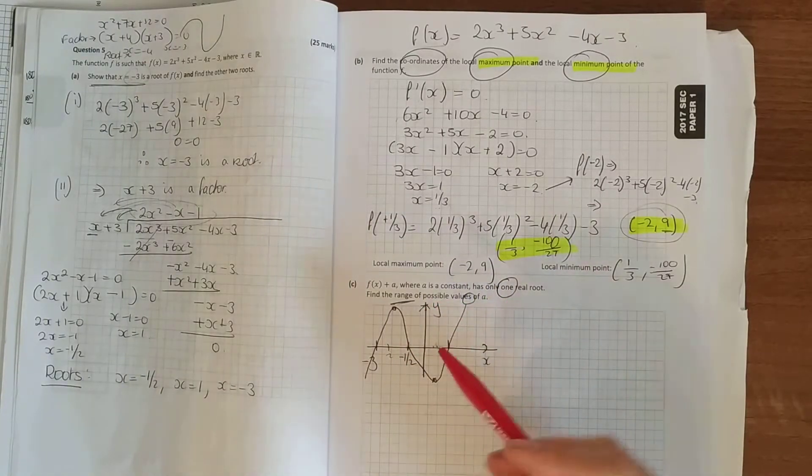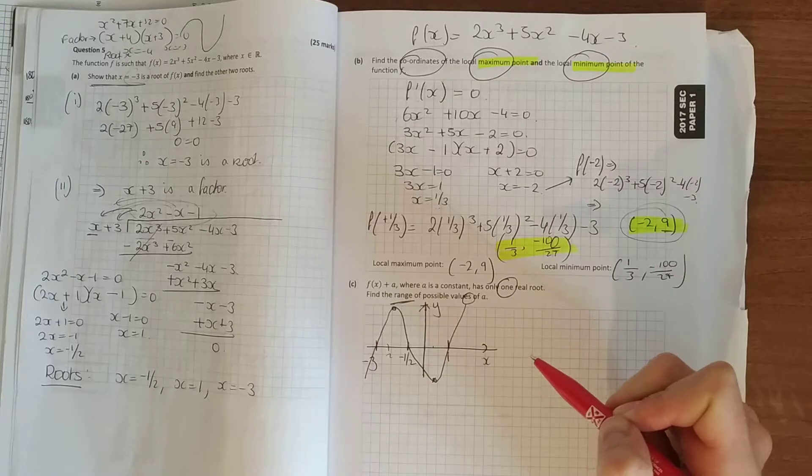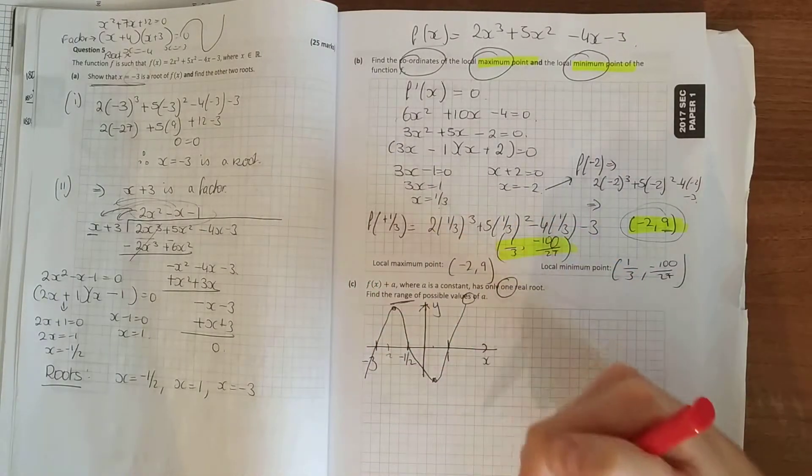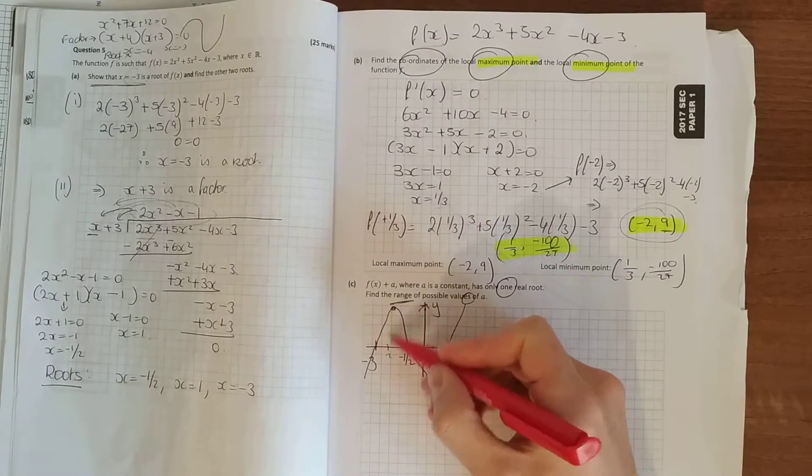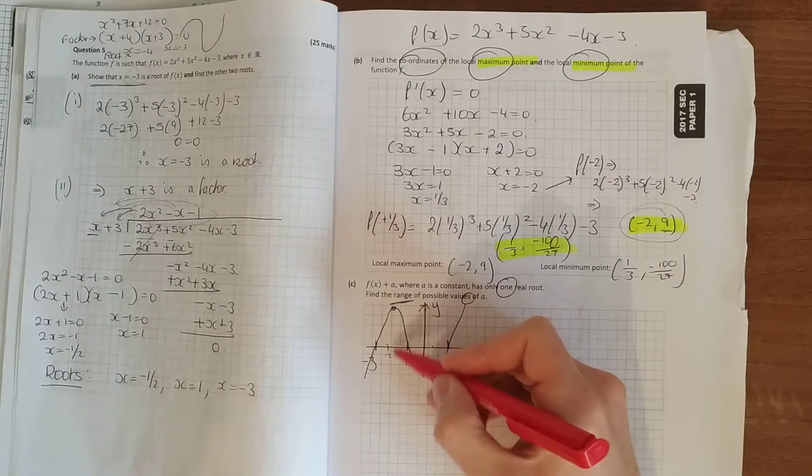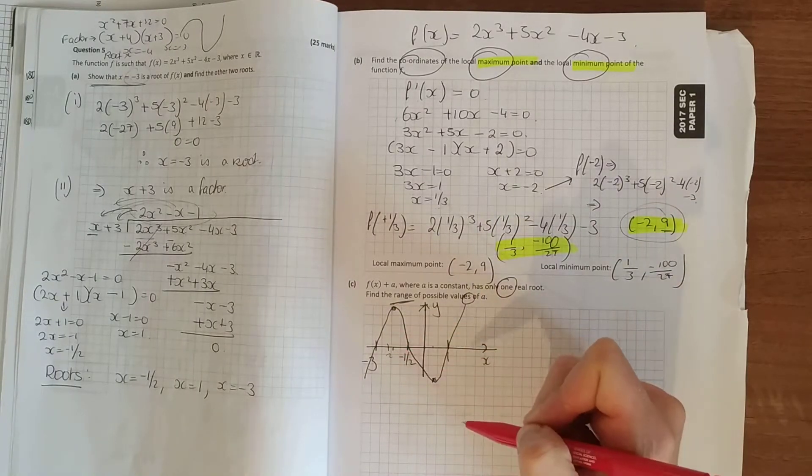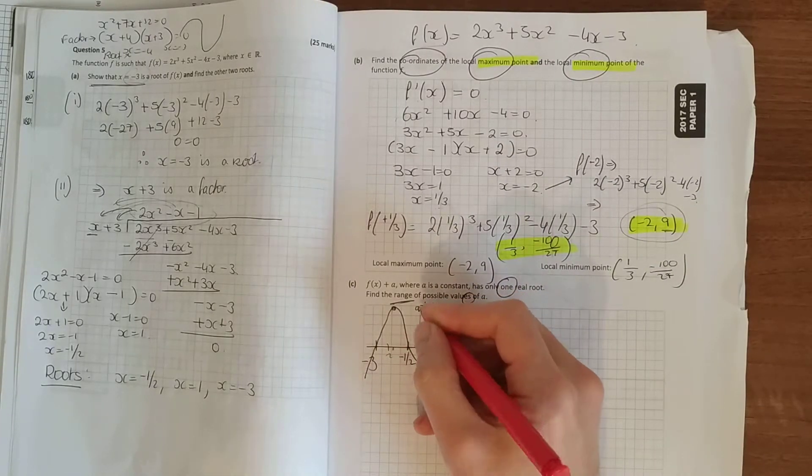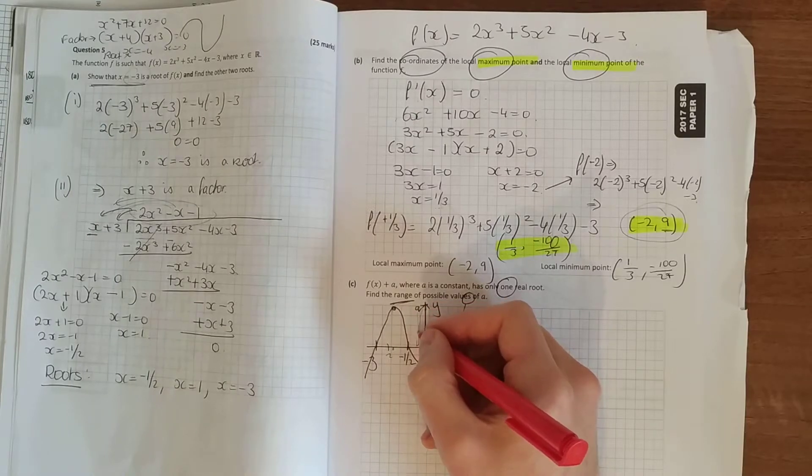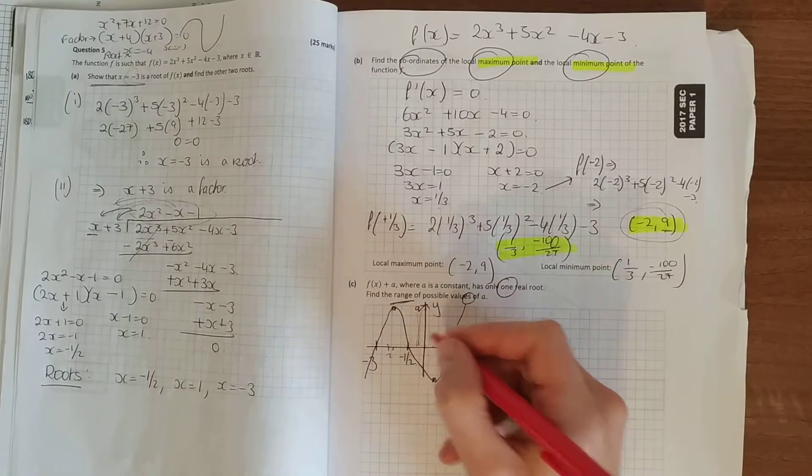Now if it only has one real root, it's only going to cut the x axis at one place. So I either shift it all up or move it all down. Now say if I wanted to move it all down, so this point here was somewhere down here. At the minute it's at nine. If I wanted to move that entirely down, my value has to be less than minus nine.